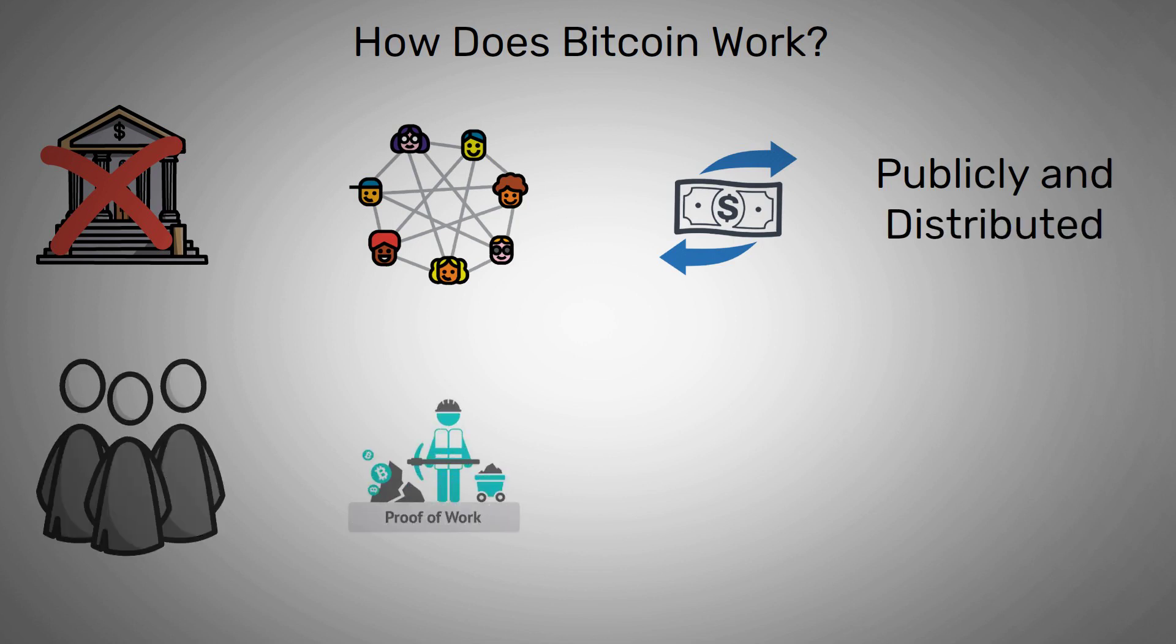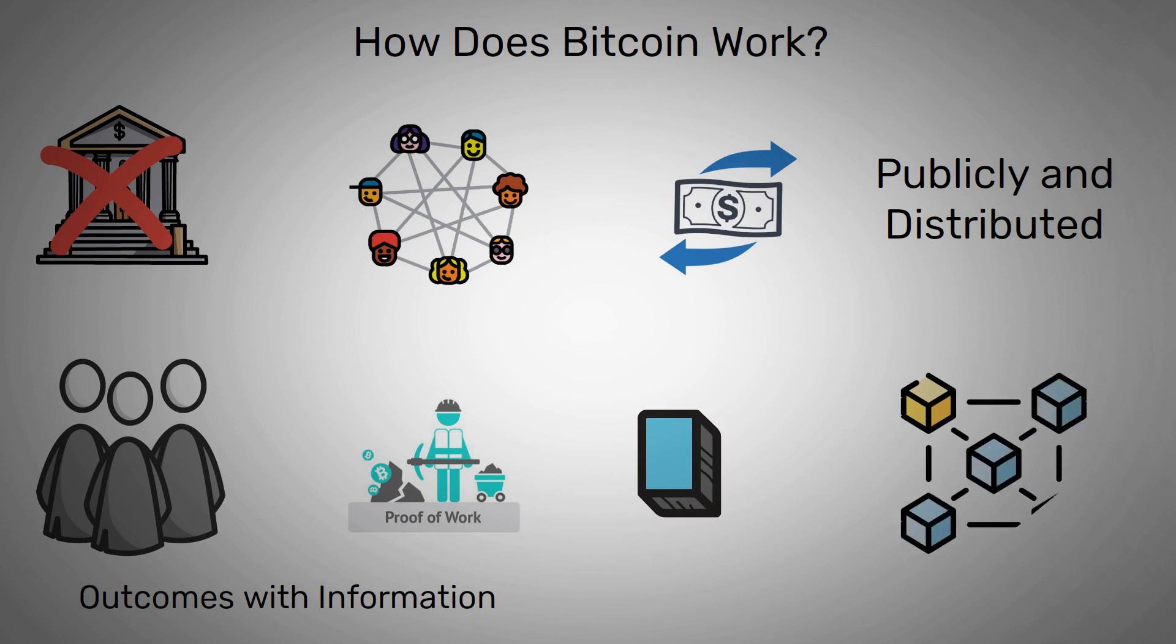Miners using the proof-of-work protocol try to prove the outcome of a transaction. These new outcomes with the information from the previous block make a new block that will be permanently added to the chain. Hence the term blockchain.